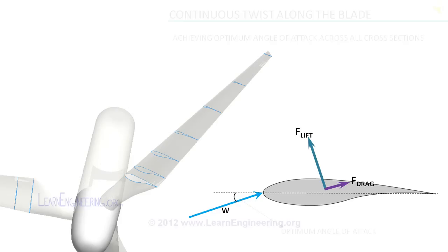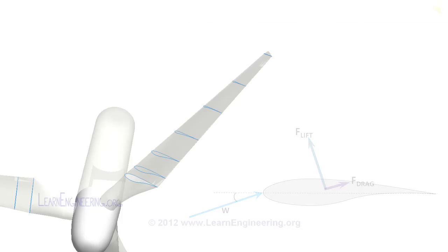Wind condition can change at any time. So it is also possible to rotate wind turbine blades in its own axis in order to achieve optimum angle of attack with varying wind condition. This is known as pitching of blades.